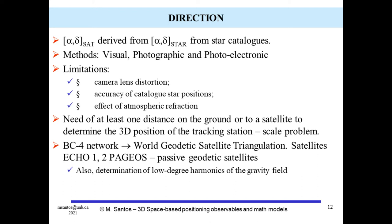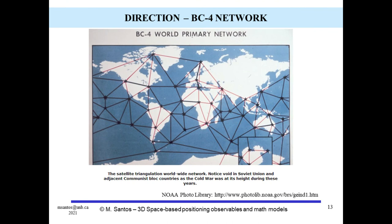Three methods to derive direction to satellites have been developed in history. The first was as simple as a visual observation of the satellite using a binocular or a portable telescope. Then, photographic methods began to be developed, until the development of photo-electronic methods. Currently, a method known as CCD — which stands for charge-coupled device — can be used. Direction to satellite had a tremendous impact in geodesy, and it was the method that allowed the establishment of the very first global geodetic network.